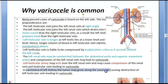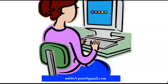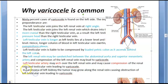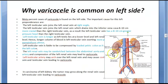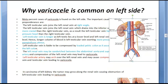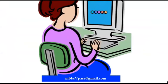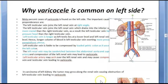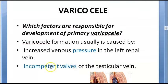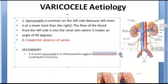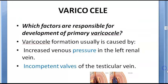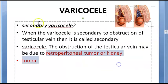Carcinoma of the left kidney may also grow along the renal vein. However, the primary reason varicocele is more common on the left is anatomical. The secondary causes — renal cell carcinoma and retroperitoneal tumor — cause secondary varicocele.